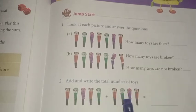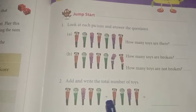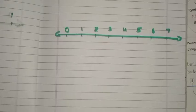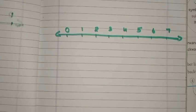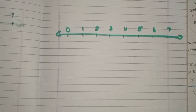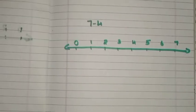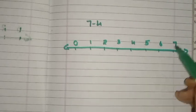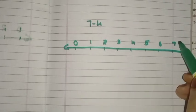Now we are going to study how to subtract numbers using a number line. First question: seven minus four. First, find where seven is on the number line — here is seven.